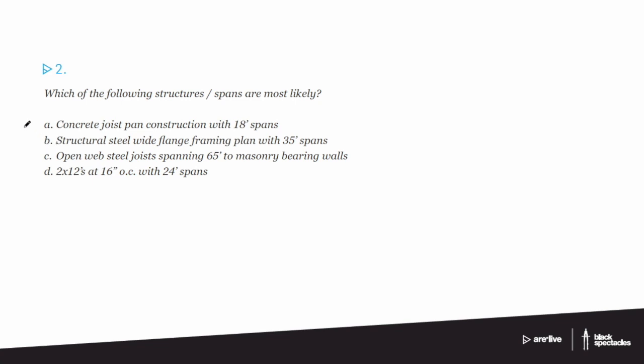So we have concrete joist pan construction with 18 foot spans, structural steel wide flange framing plan with 35 foot spans, open web steel joists spanning 65 feet to masonry bearing walls, 2x12s at 16 inches on center with 24 foot spans.